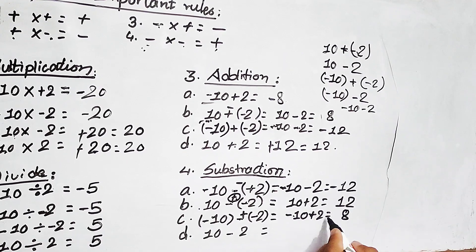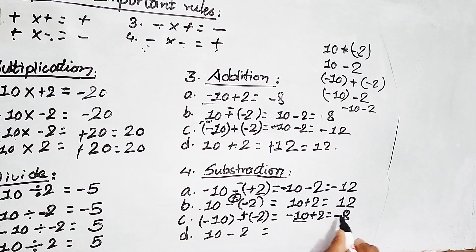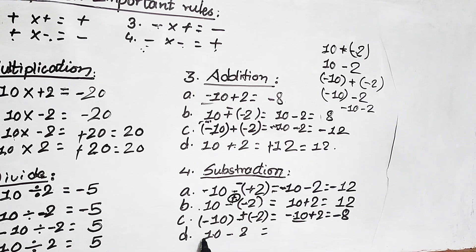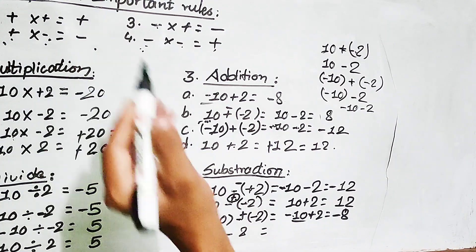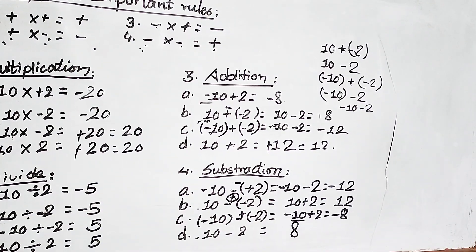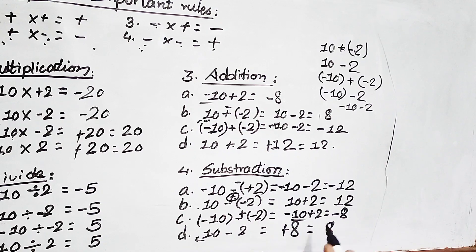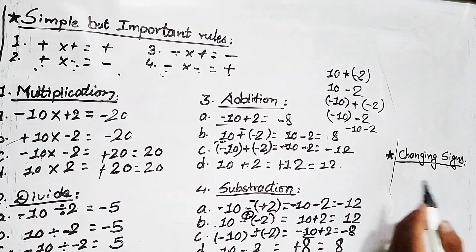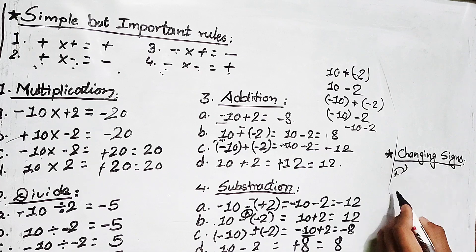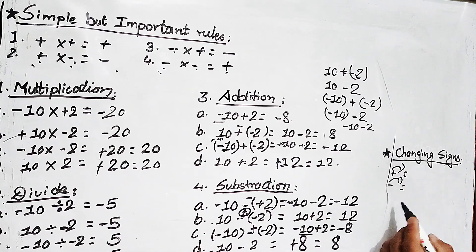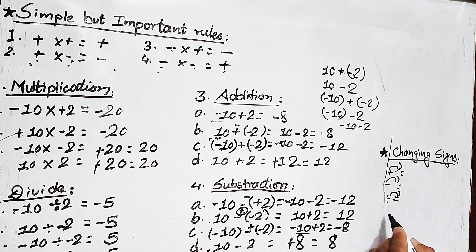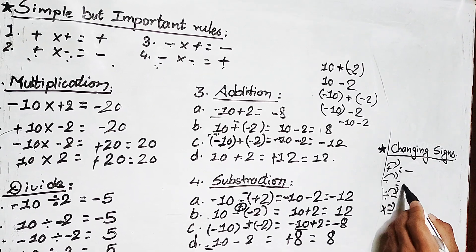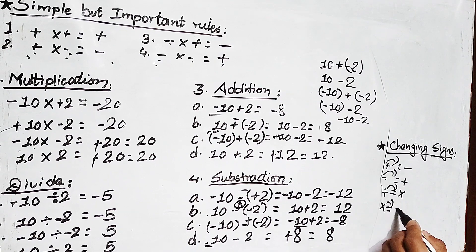Then the sign is minus. Next is 10 minus 2. This is plus minus k. Suppose the last one is changing sign: if plus is k, minus is k, divide is k, and multiply is k. Minus minus is plus, plus divide is multiply, and multiply is divide.